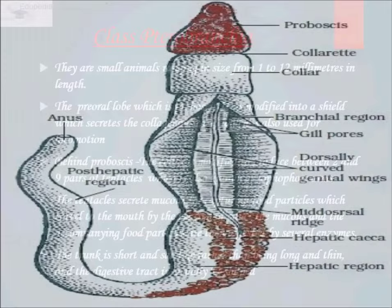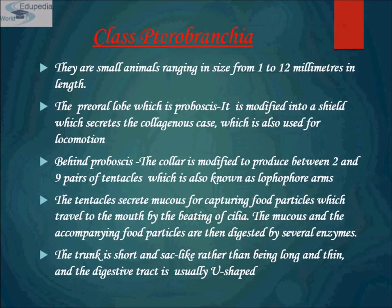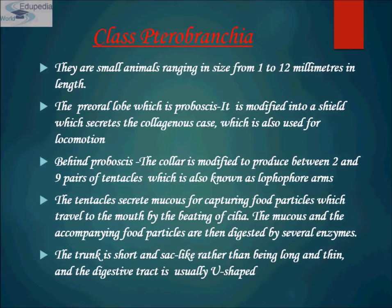Now, Class Pterobranchia: with only about 10 to 20 species, they make up less than one-fifth of the hemichordata. They are small animals ranging from one to two millimeters in length. Pterobranchia live in much deeper water than the enteropneusta, and their soft body makes them difficult to study, so much less is known about their ecology.